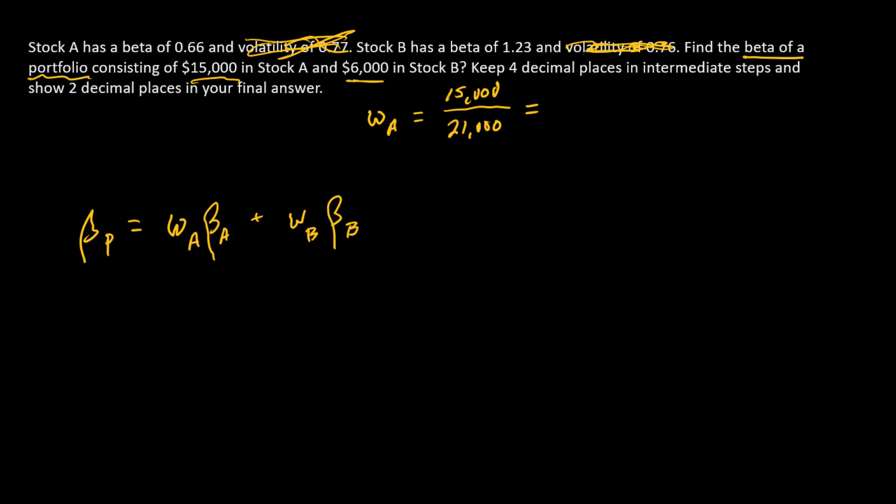So this weight is 0.7143. Weight in B is $6,000 divided by $21,000 or 0.2857.